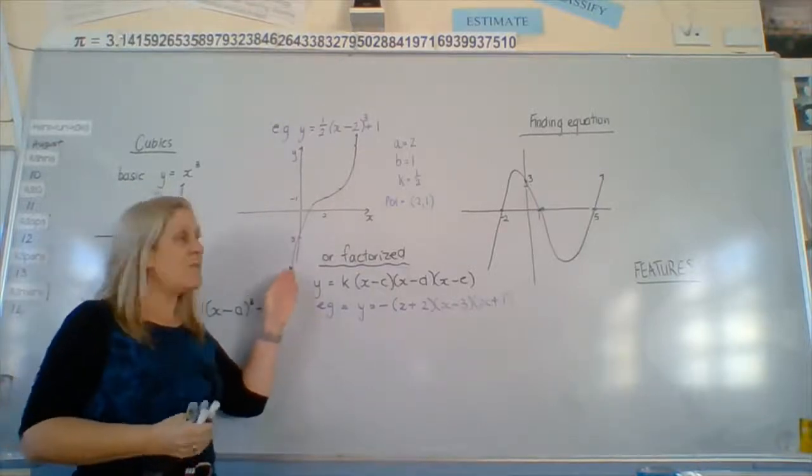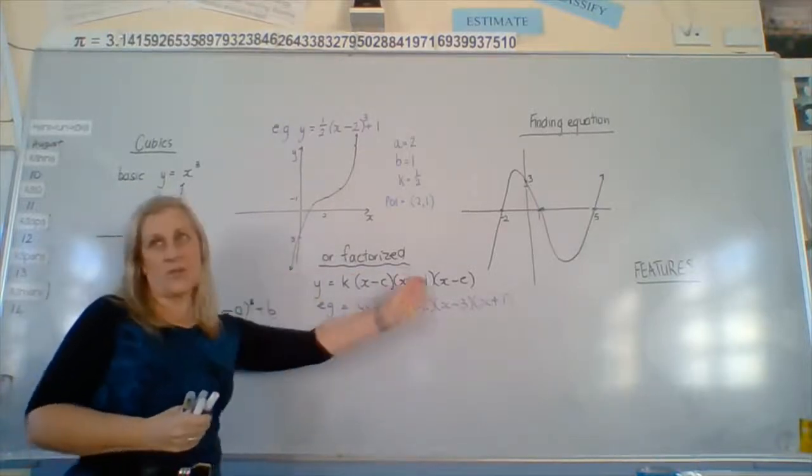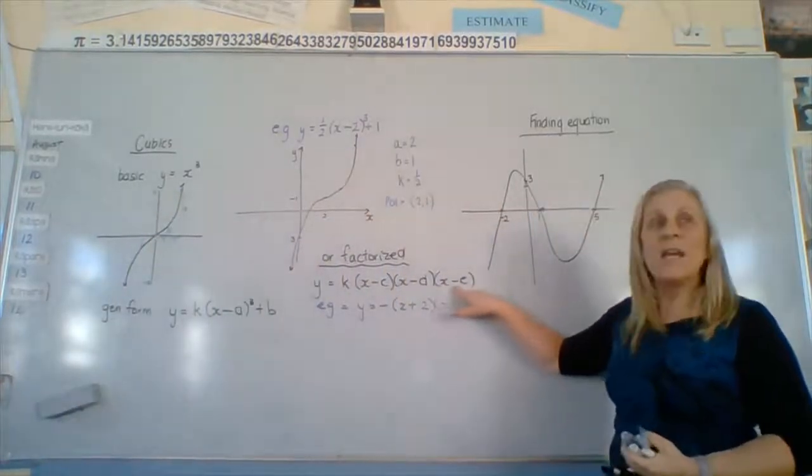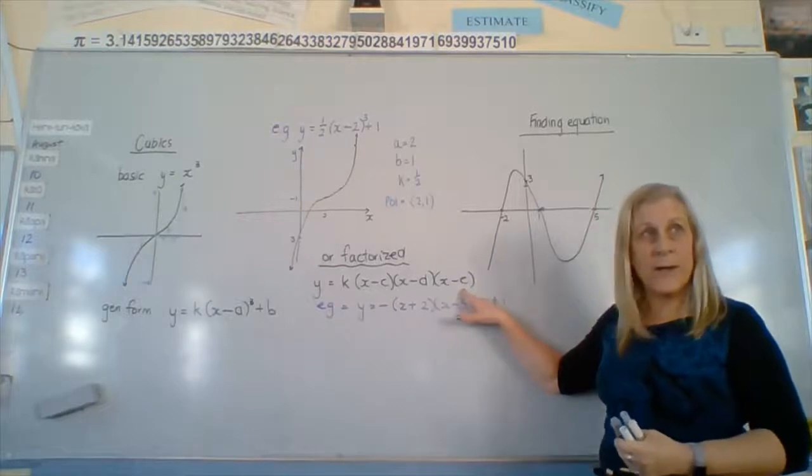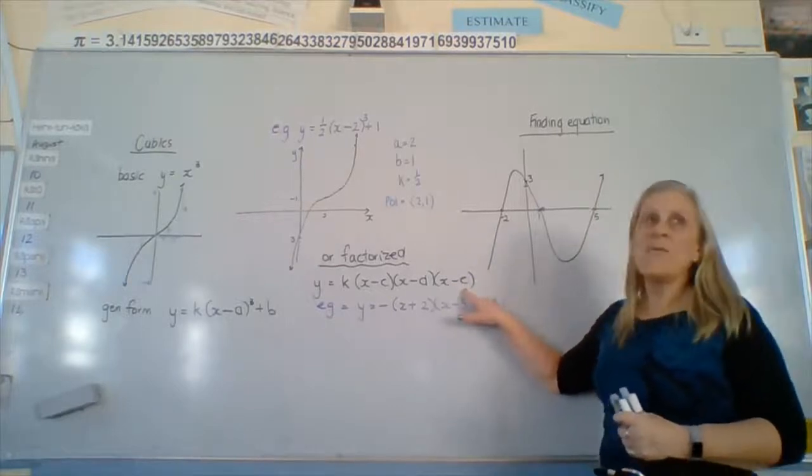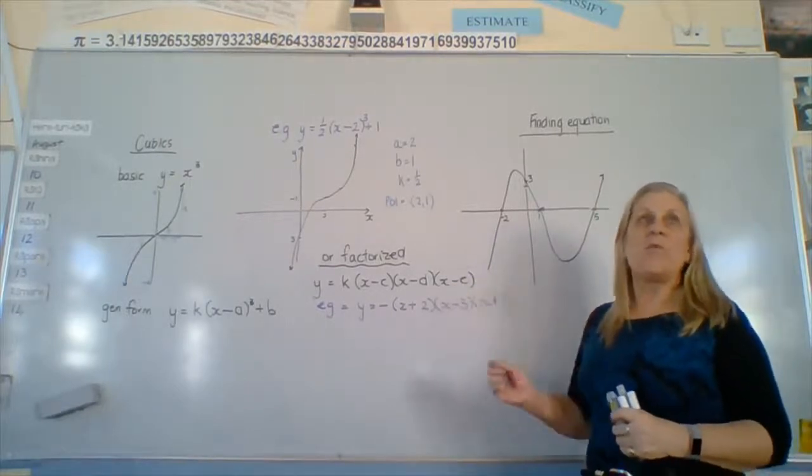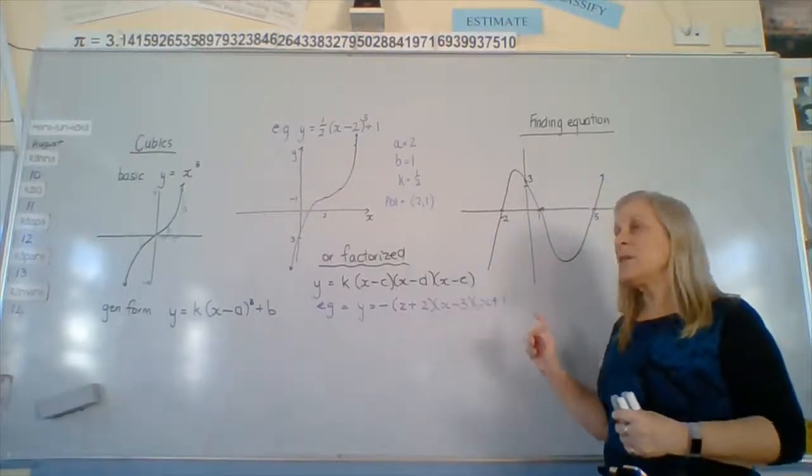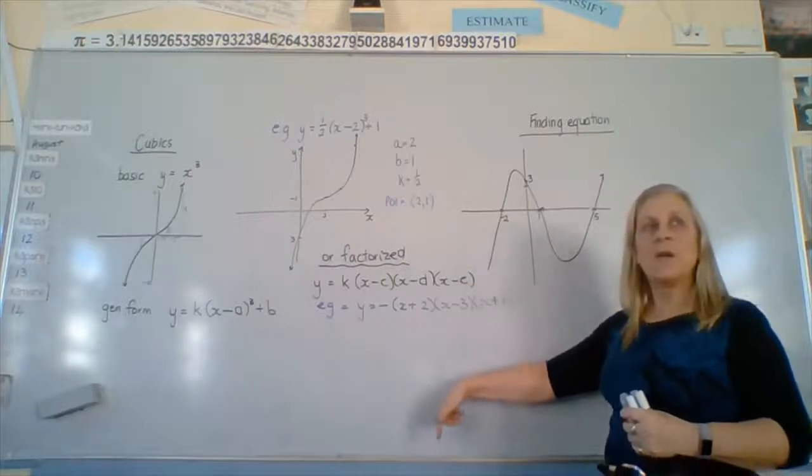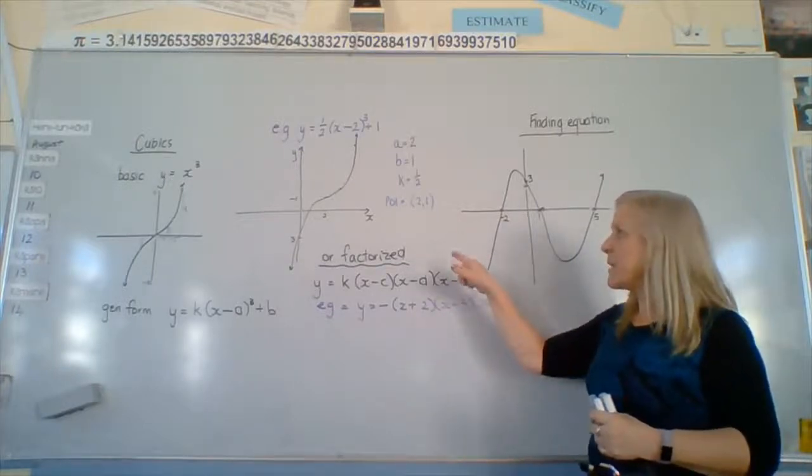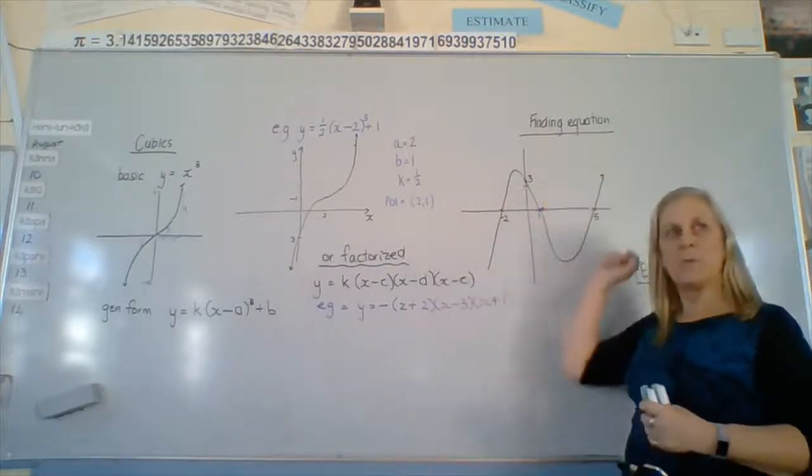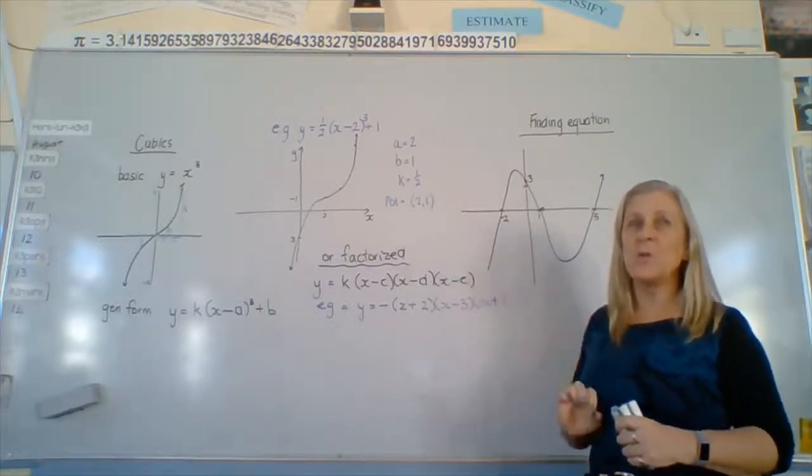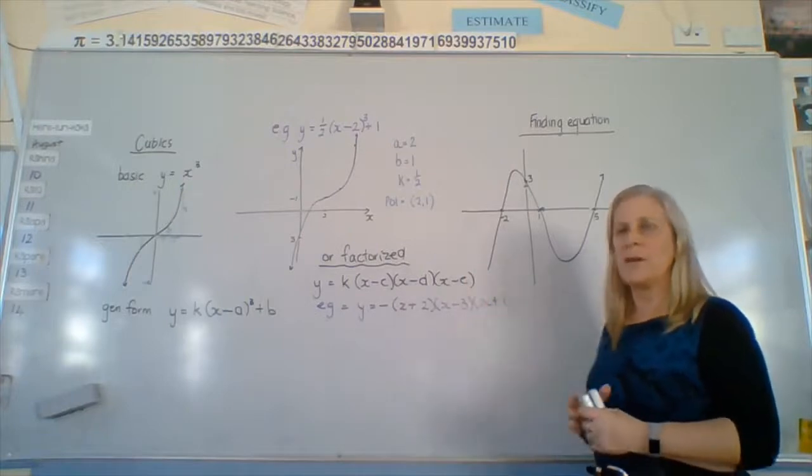So the other way we can have this cubic is to have it factorised. All we've done here from a parabola is add on an x minus e, an extra one. When we have polynomials, they have one bend for every power. So when it's a squared, we have one curve. When it's a cubic, it has a 3-power, we have two curves. So if we had 8, we would have 7 wiggles, maybe. Not always, but quite a lot of the time.